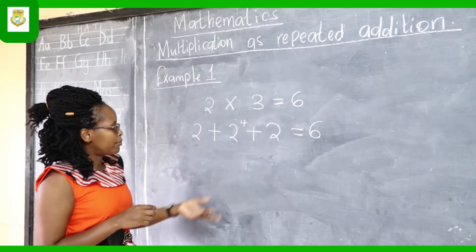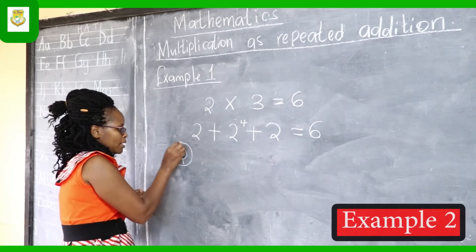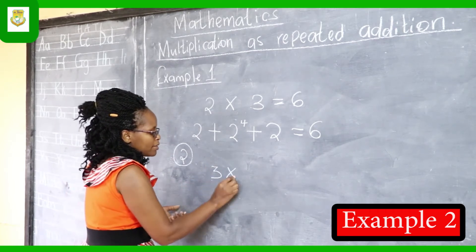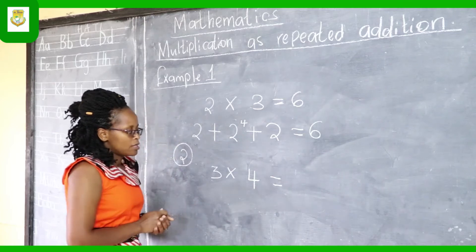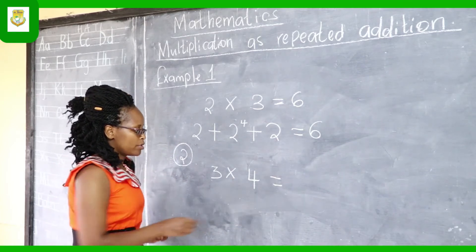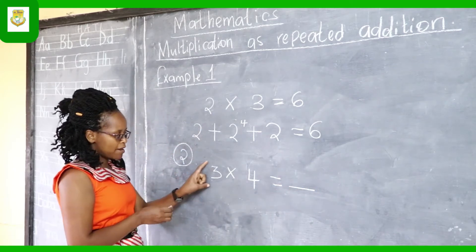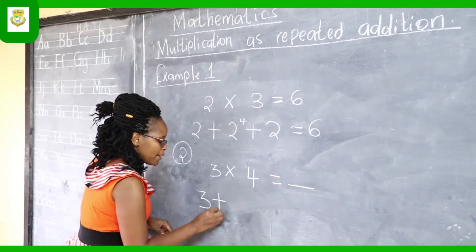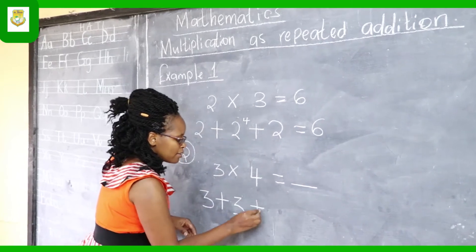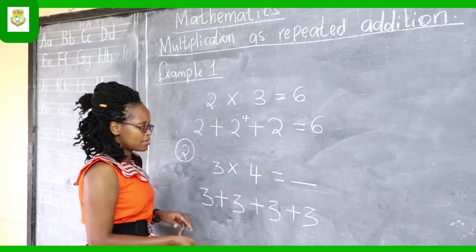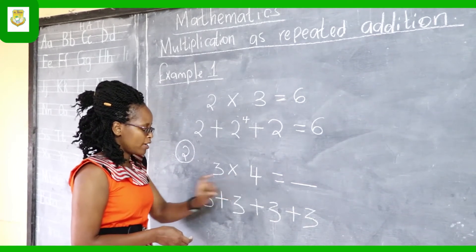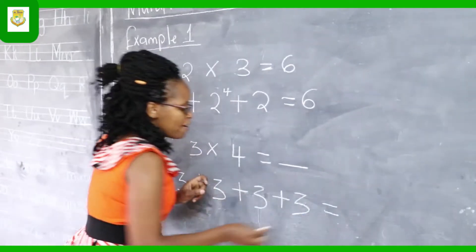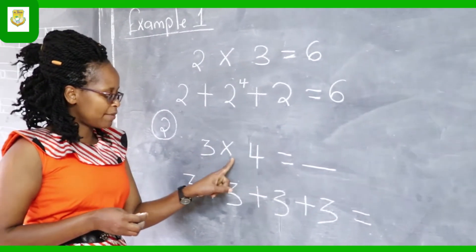Now example two. Let's take a case of three multiplied by four. We have three multiply four equals blank. Our first digit, three, is the number to be added. So we have three plus three plus three plus three. How many times is three added? Three multiplied by four — let's count: one, two, three, four. It means three is added four times to give us three times four.